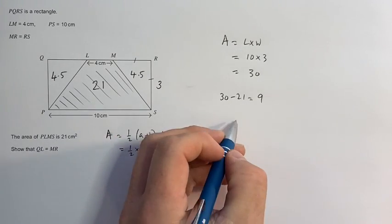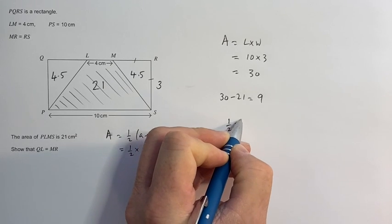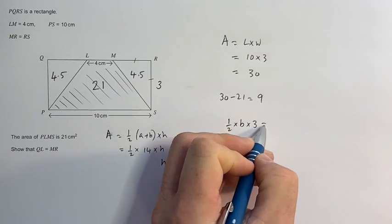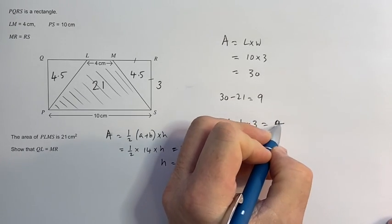Now the area of a triangle is half the base times the height, and that should equal 4.5.